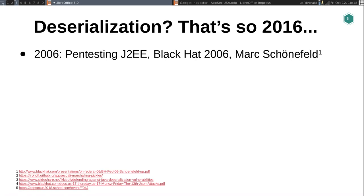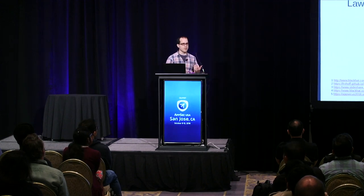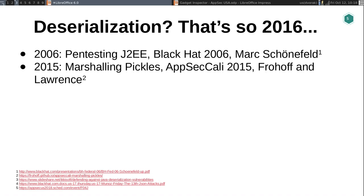So why am I talking about deserialization? If you've been following this vulnerability class, this has been super talked about since around 2016, but it actually goes back way before that. Some of the first talks were back in 2006 — Mark Schoenenfeld gave a talk at Black Hat describing what some of these vulnerabilities look like in popular enterprise applications and application containers. But even though it was first discovered in 2006, it wasn't really popularized until 2015, with Frohoff and Lawrence's talk at AppSecCali on Marshaling Pickles, where they described RCE gadget chains in popular open source libraries. So it's not just specific application containers — if you're pulling in any of those libraries, you might have code execution in your app.